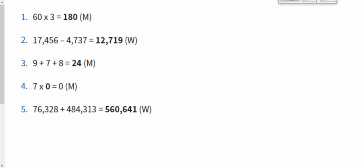And the last one was a written method because most numbers have no relationship. So we just need to add them together using the column method for 560,641. Right. Let's move on to our learning.